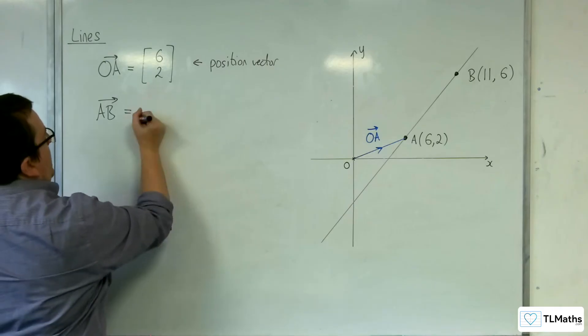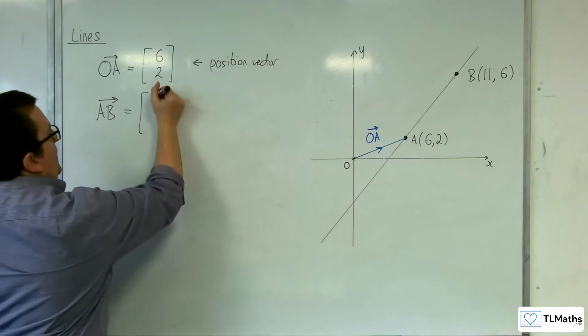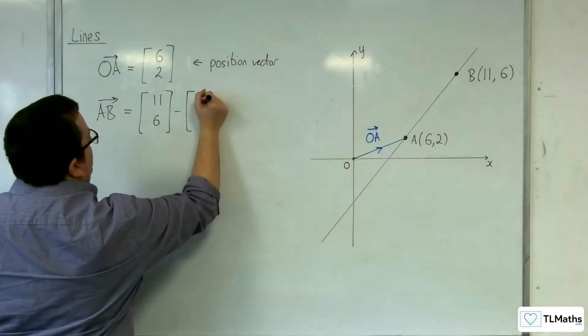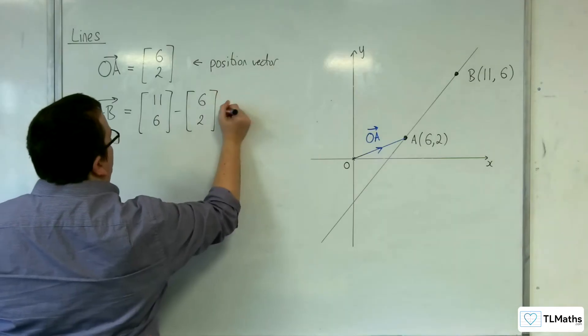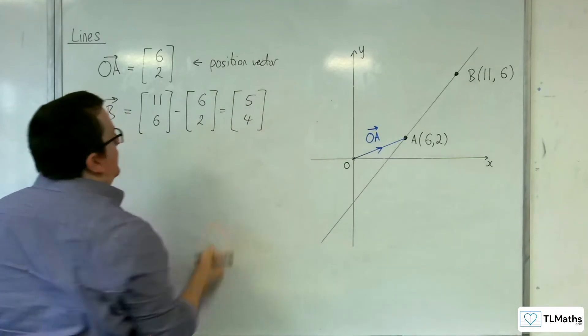So AB can be worked out using OB minus OA. So OB is (11, 6), and OA is of course (6, 2), and we get (5, 4).